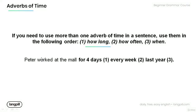If you need to use more than one adverb of time in a sentence, use them in the following order: one — how long; two — how often; three — when. Have a look at the example: 'Peter worked at the mall for four days every week last year.' Note that 'four days' tells us how long, 'every week' tells us how often, and 'last year' tells us when.